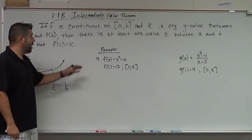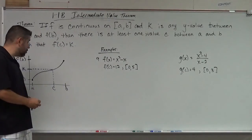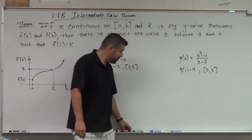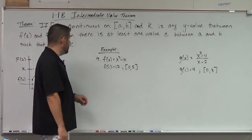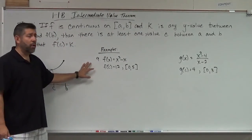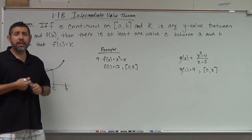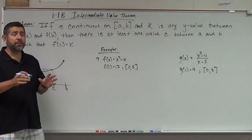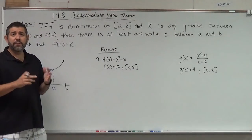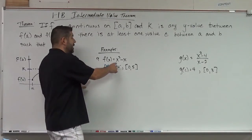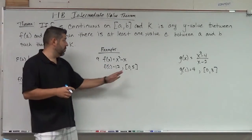So my first example here is, I've got a function x squared minus x, and the question is, does the intermediate value theorem hold for f(c) equals 12 on the interval 0 to 5? So I have to check a few things. The first thing is, is the function continuous? Well, x squared minus x,